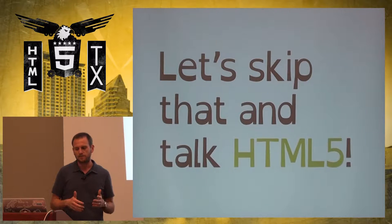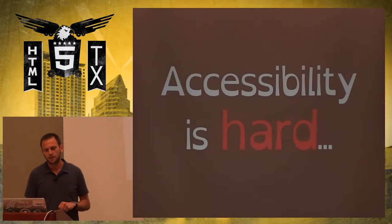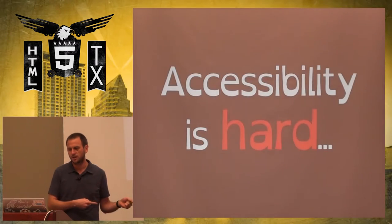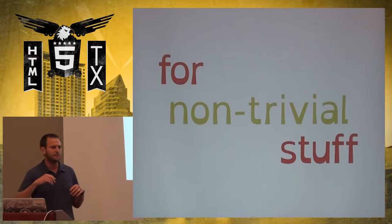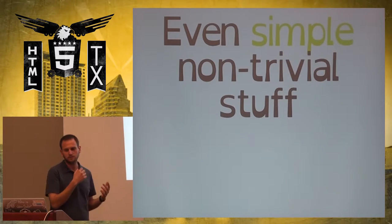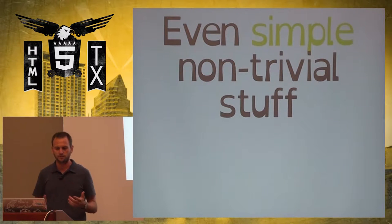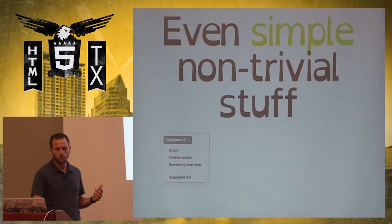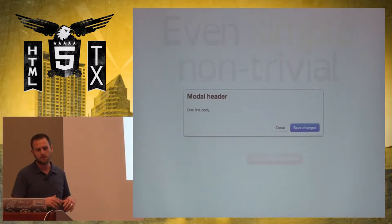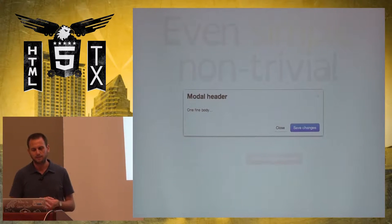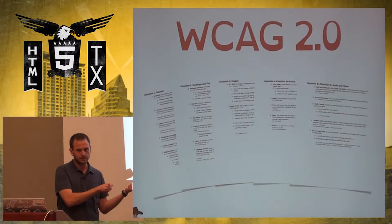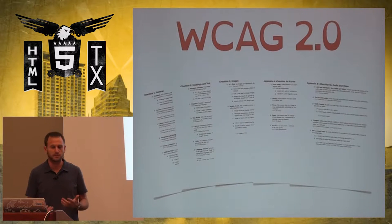The good news is that what I'm presenting today is pretty easy to implement. On to the bad news: accessibility is hard. When you get past the simple stuff, when you start getting into JavaScript and dynamic pages, it gets really hairy. Even simple non-trivial stuff — like having a dropdown, a pop-up window, or even a modal — having to manage focus, make sure it's keyboard accessible, make sure that when it pops up a screen reader reads it. That can get pretty tricky. Trying to meet all of these guidelines is tough.